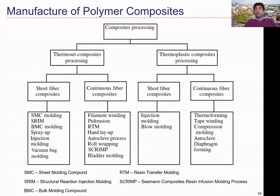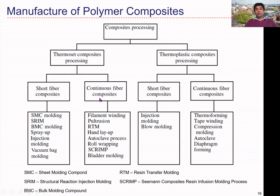Let's focus on different types of polymeric composite manufacturing techniques. Composite processing can be categorized into two main types based on the matrix material: thermoset composites and thermoplastic composites. Thermosets cure irreversibly, while thermoplastics can be reprocessed several times. After selecting the material type, we can further classify by fiber length — short fibers or continuous fibers — for both thermoset and thermoplastic types.